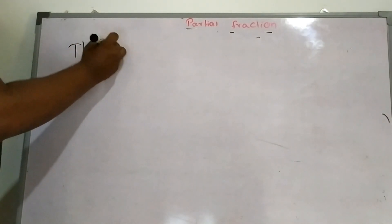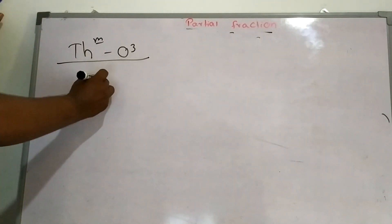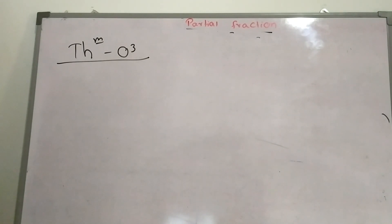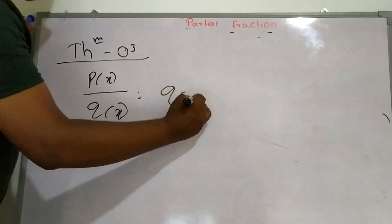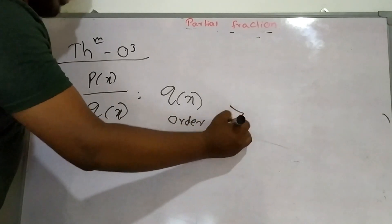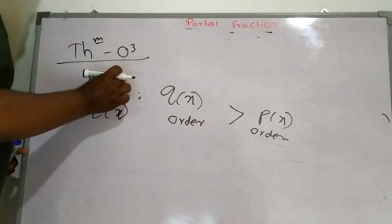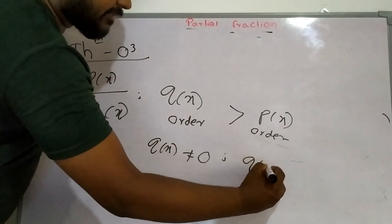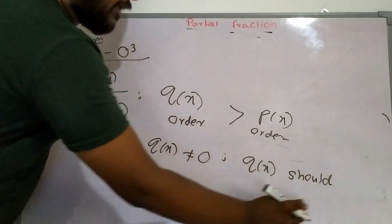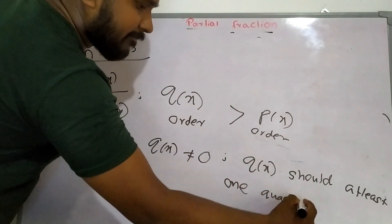Tier number 3: P(x) over Q(x) where the order of Q(x) is greater than the order of P(x). The order means the largest power, Q(x) is not equal to 0, and Q(x) should have at least one quadratic part.